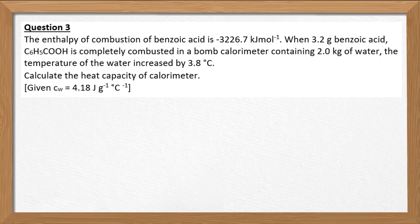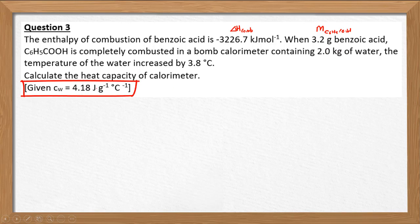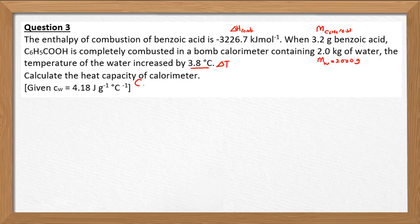Moving on to question 3: the enthalpy of combustion of benzoic acid is given in kilojoules per mole. This is the enthalpy of combustion. When 3.2 grams of benzoic acid is completely combusted in a calorimeter containing 2 kilograms of water — make sure to convert to grams, so mass of water equals 2000 grams — the temperature of the water increased by 3.8 degrees Celsius. So delta T is already given. Calculate the heat capacity of the calorimeter.